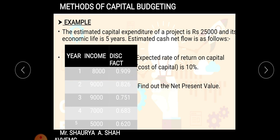The third column shows the discounting factors. These sums come in your exam for around 10 to 12 marks. The discounting factors are: Year 1 — 0.909; Year 2 — 0.826; Year 3 — 0.751; Year 4 — 0.683; Year 5 — 0.620. These are determined on the basis of the expected rate of return on capital — cost of capital is 10 percent. Generally in the sum, these discounting factors will be given.